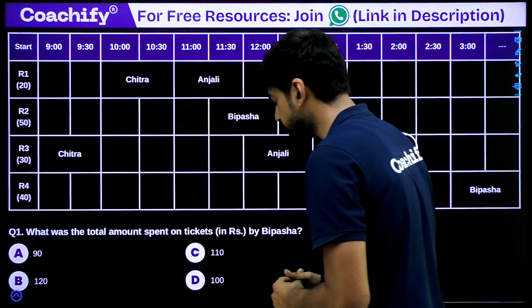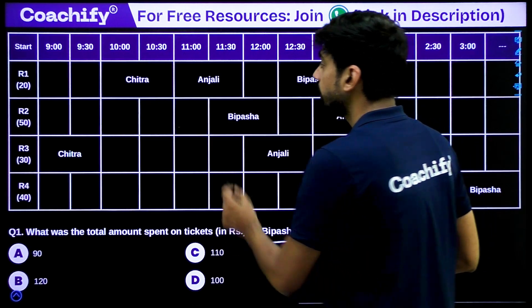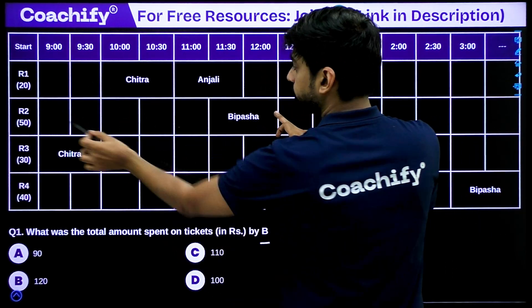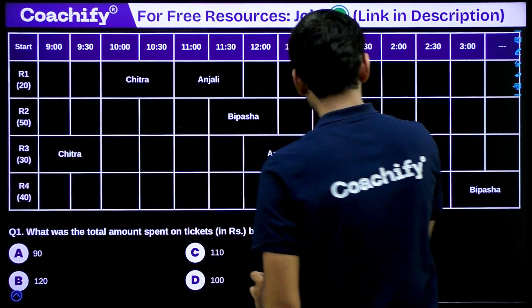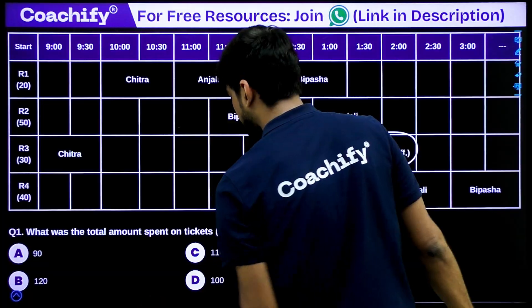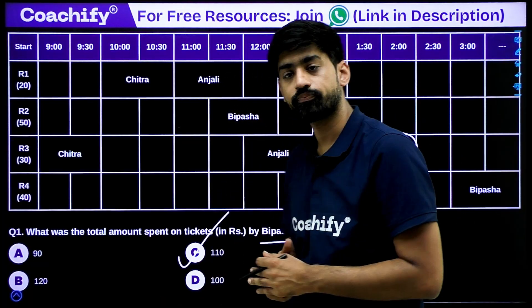Question 1: What was the total amount spent on tickets by Bipasha? Bipasha took ride 2 (50 rupees), ride 1 (20 rupees), and ride 4 (40 rupees). That is 20 + 50 + 40 = 110 rupees.